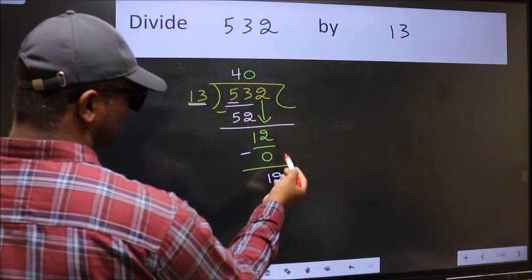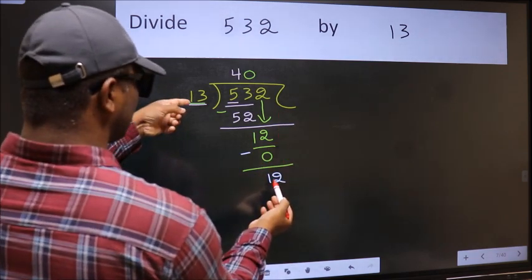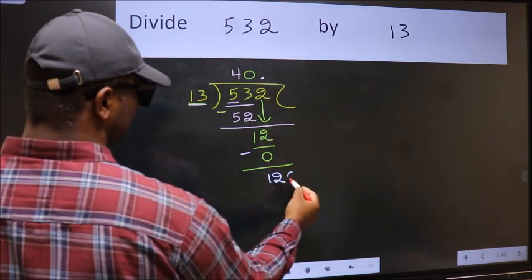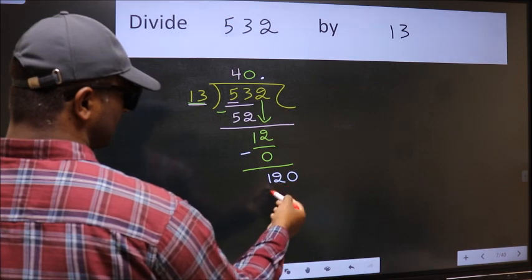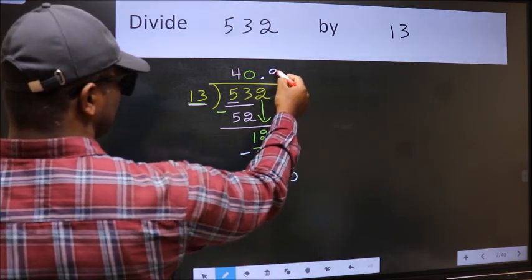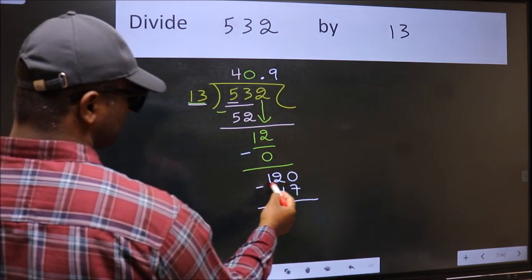And 12 is smaller than 13, so now we can put dot and take zero, so 120. A number close to 120 in the 13 table is 13 times 9, which is 117. Now we should subtract, we get 3, and you continue the division. I am not doing that.